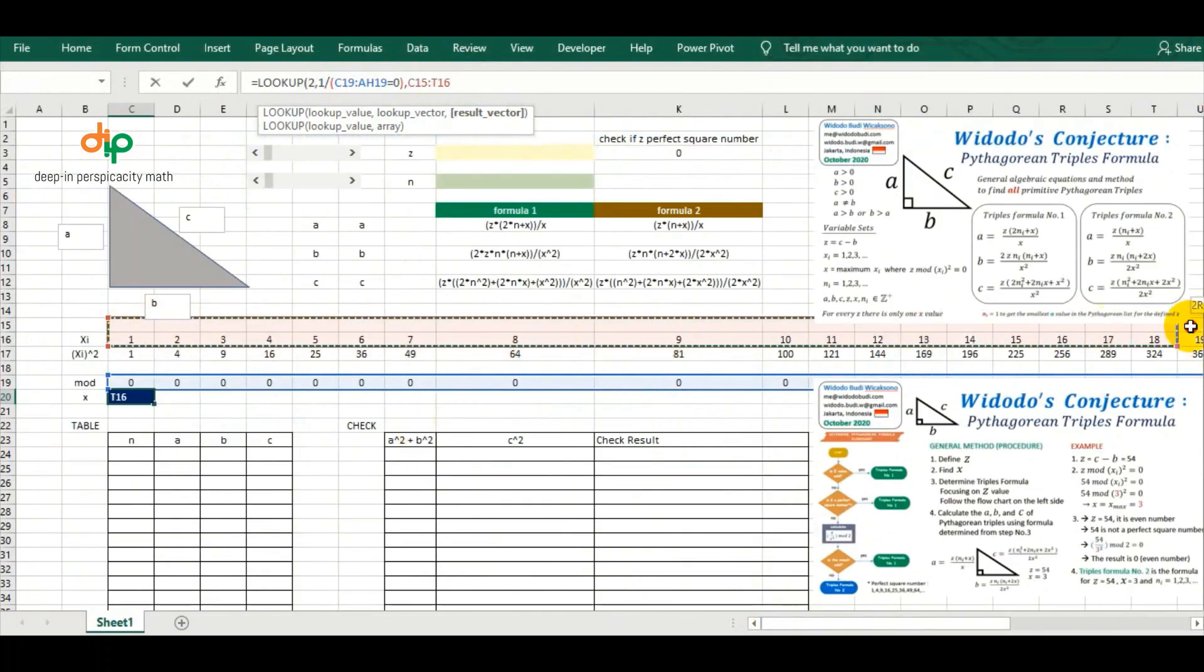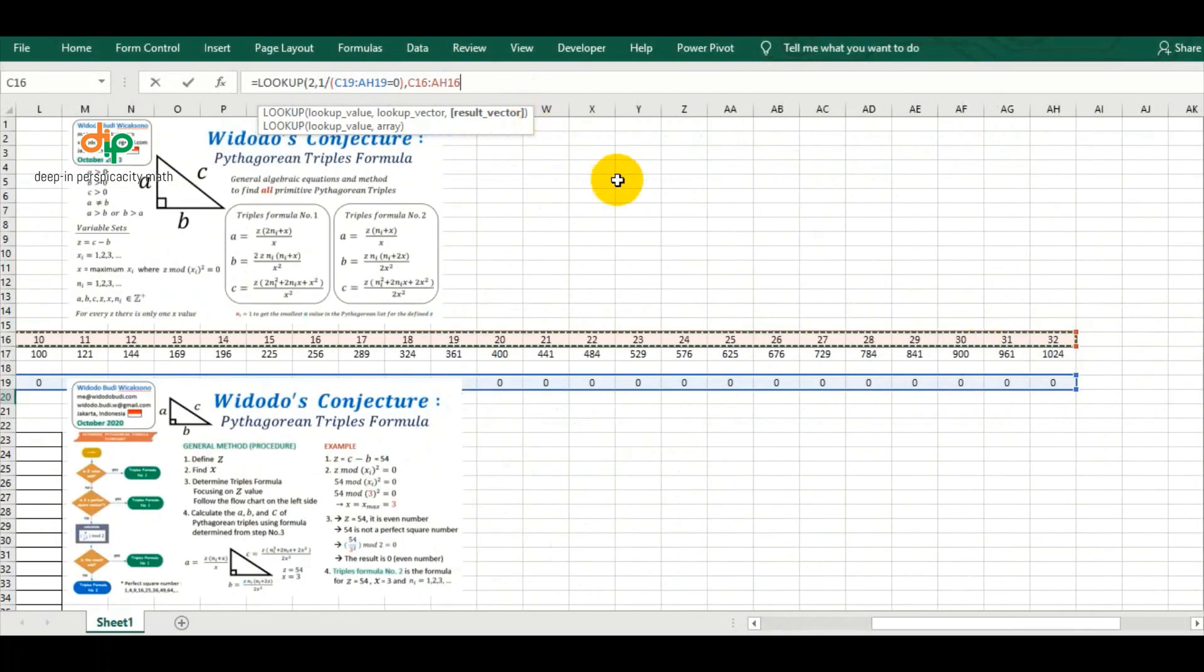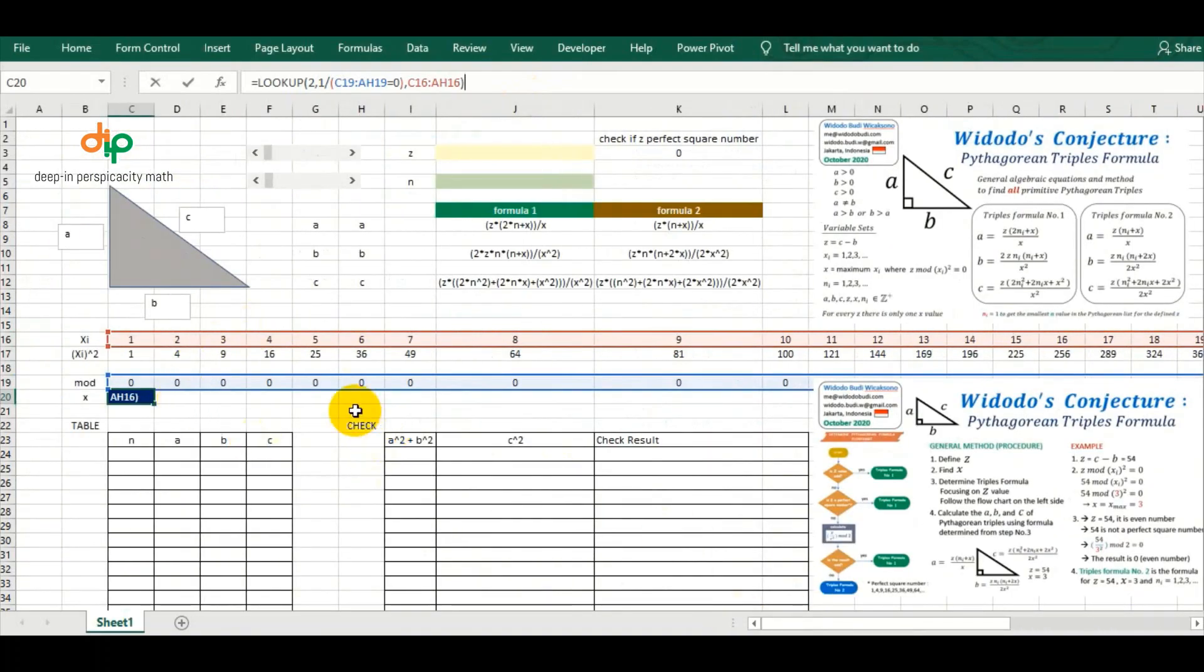The final X value is the highest XI where the remaining of division Z by XI square is zero.